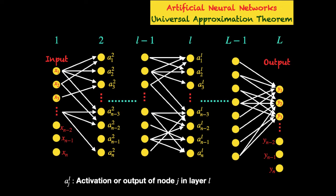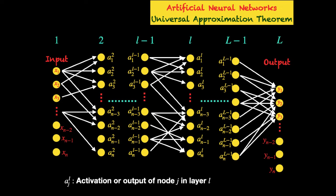For the layer with number L, its nodes are labeled AL1, AL2, AL3, and so on up to ALN. Similarly, layer L-1 has nodes labeled with superscript L-1 and subscripts 1, 2, 3, and so on up to N. The basic idea to remember is that A represents the output of each node, the superscript refers to the layer number, and the subscript refers to the node number.